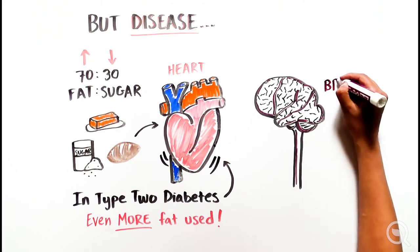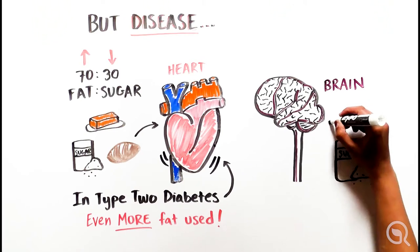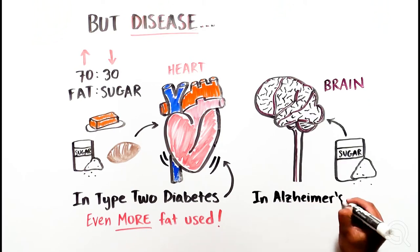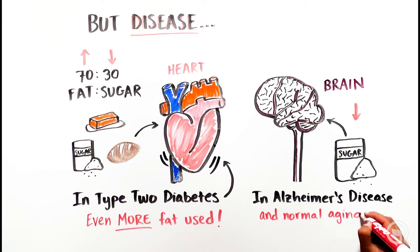The healthy brain runs almost entirely on sugar, but in Alzheimer's disease, the brain's ability to use sugar goes down. Research is underway to figure out exactly why this is. This even happens to some extent in normal aging.